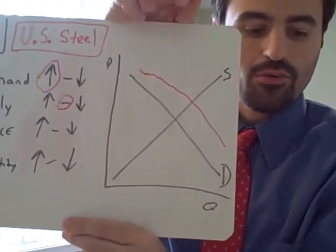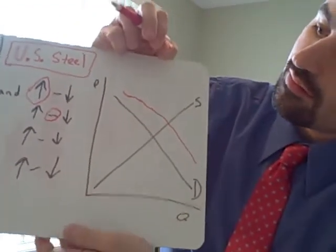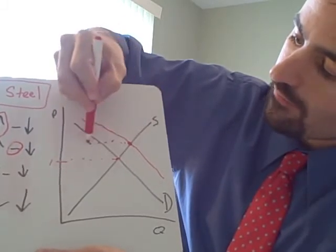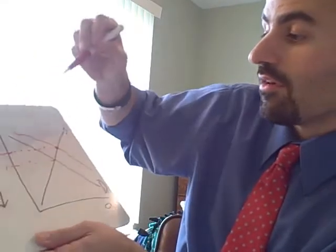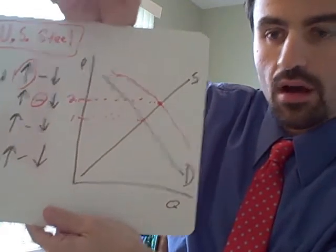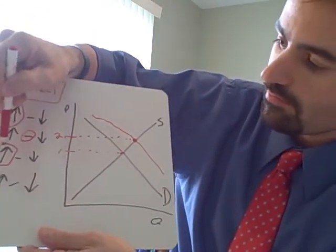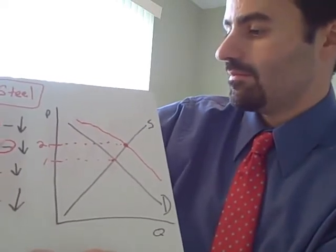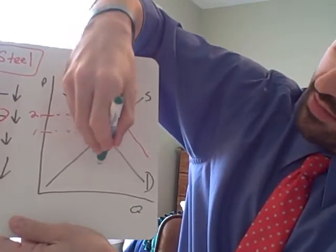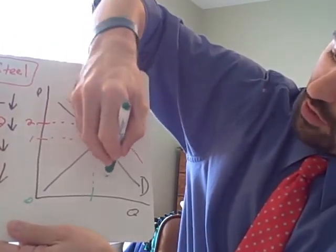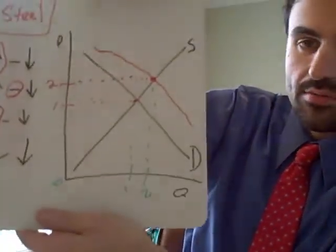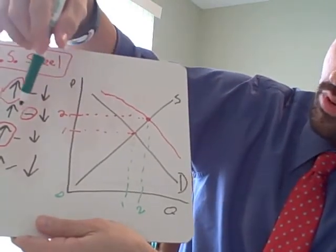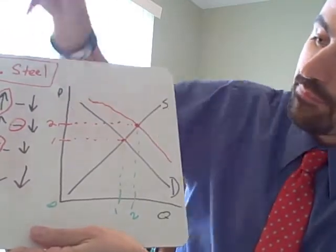Now that we have our graph, we can see what is going to happen to price. Here was my first price. Do the dotted line over again if it helps you. Here's my second price where they intersect. What happened? The price went up. Increase in price. Now we can do dotted lines down for quantity as well.